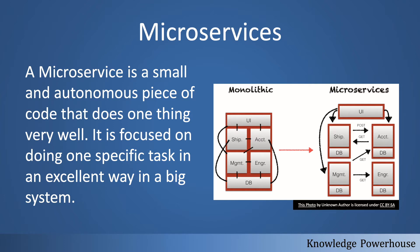Microservices focus on doing specific tasks and doing them in an excellent way. In a big system, like an e-commerce system, you can have a product listing service, an order service, an inventory management service, a product recommendation service, and so on. For example, the UI is a different microservice, shipping is a different microservice, accounting is another — there are many different microservices in a big system.